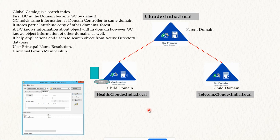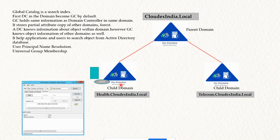Global Catalog also stores universal group membership. For example, if there are 10 users and two of them are members of a universal group, the Global Catalog stores that membership information. When those users try to log in, the Global Catalog service authenticates them. If the Global Catalog service is not available, those two users cannot log in to the domain — though other users can. This is one of the key disadvantages, so the Global Catalog must be available if any users are members of universal groups.